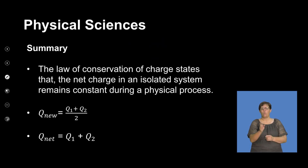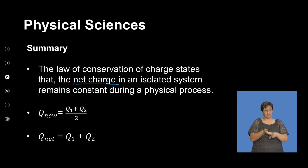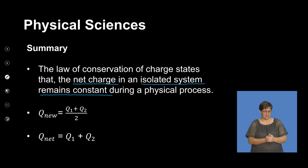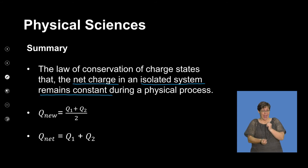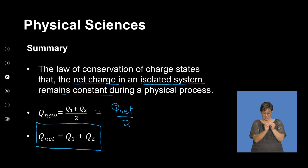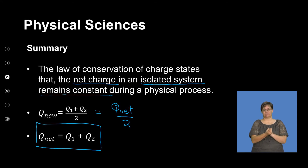In a nutshell: the law of conservation of charge states that the net charge in an isolated system remains constant during a physical process. To obtain the new charge during a physical process, it equals Q_net divided by 2, because Q_net is the sum of the two interacting charges. That's the main idea as far as conservation of charge is concerned.